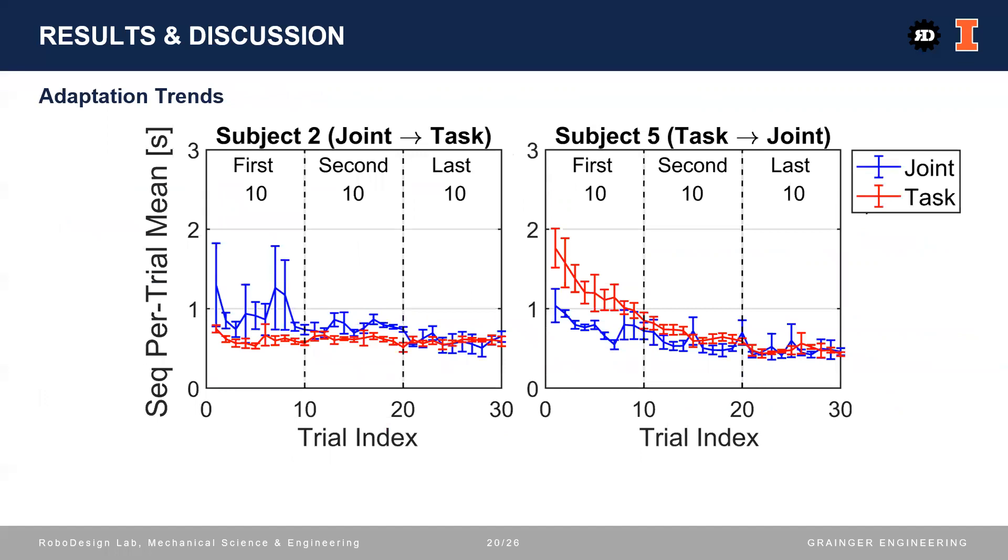Despite the similar stable mean reaction times, the two mappings produced different results in adaptation trends. Shown here are two subjects' per-trial mean reaction times in the first-ten, second-ten, and last-ten trials of sequential striking tests. Remember that no subject had teleoperated robot before the first-ten trials, and all subjects were adapted to the teleoperation in the last-ten trials. Subject two began with joint-based mapping and then task-based, while subject five had the opposite order of mappings.